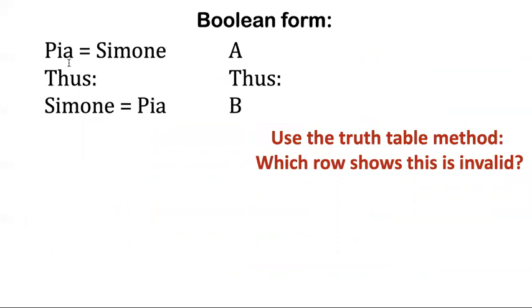Like take these two sentences. Pia is Simone and Simone is Pia. This is actually valid. Identity is symmetric. If it goes in one direction, Pia is Simone, it goes in the other direction, Simone is Pia. But Boole doesn't realize that because the validity of this depends upon the identity relation and that's not a truth functional connective.